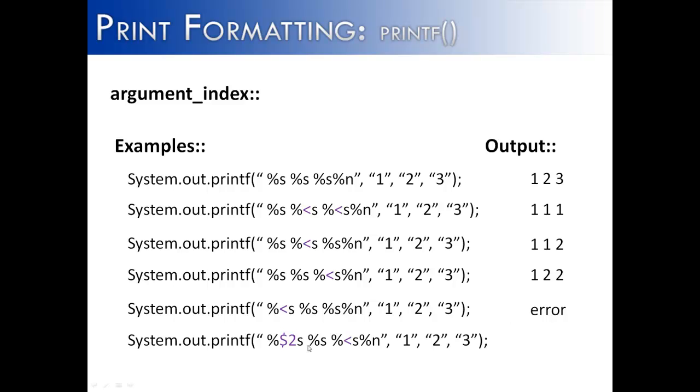In this next example, you can see that I have combined both the argument index and the less than sign in the same formatting string. The problem with this line, though, is that this is incorrect syntax. This statement would produce an error because the 2 should go before the dollar sign and it would be missing the index. And this 2 would be considered a width, not an index.